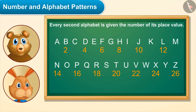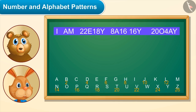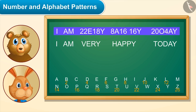Like, look — I have given every second alphabet its place value as the number. Now you say something and I will write it in code. Hmm... I am very happy today.